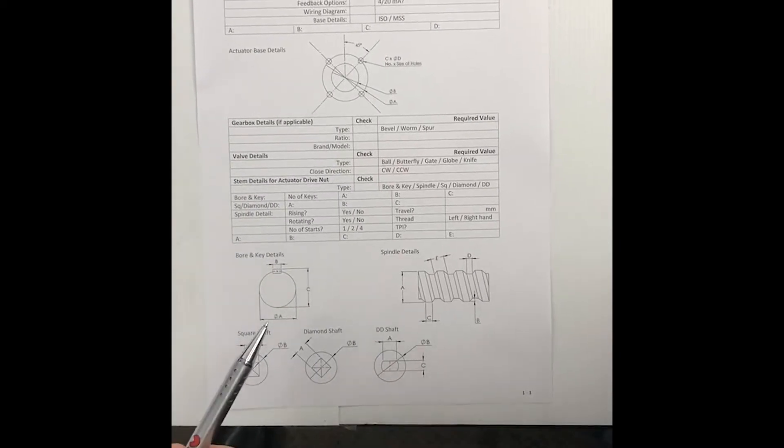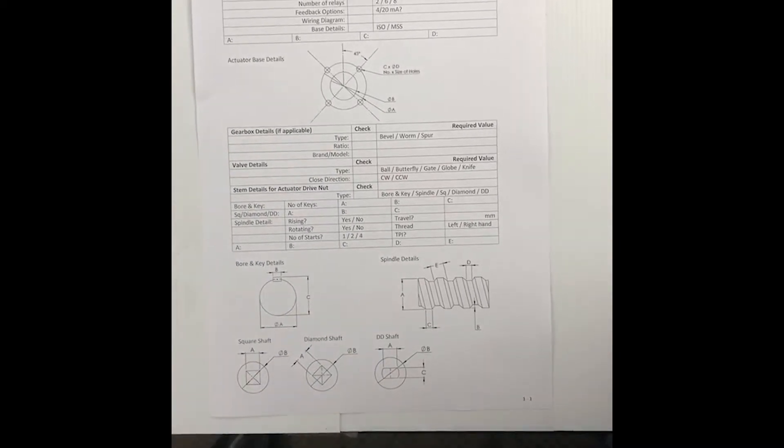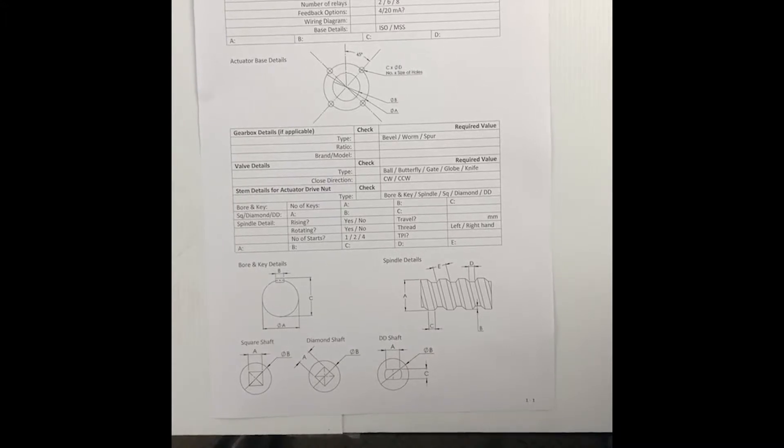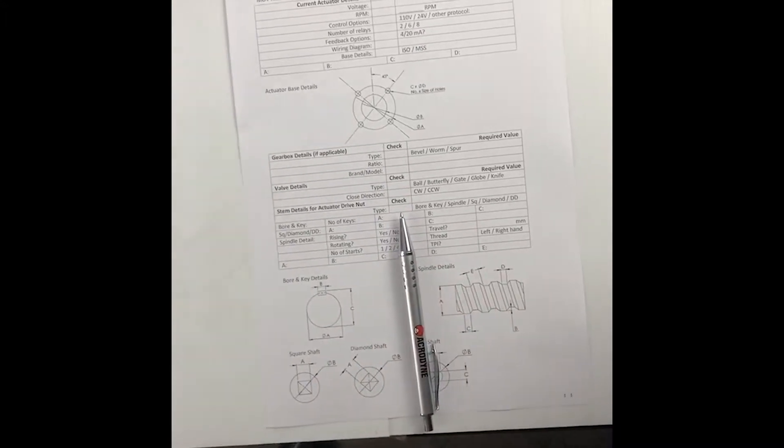Okay, today we're going to measure dimensions A, B and C and in addition we're also going to measure the length of the shaft. So first dimension is dimension A which is the shaft diameter.